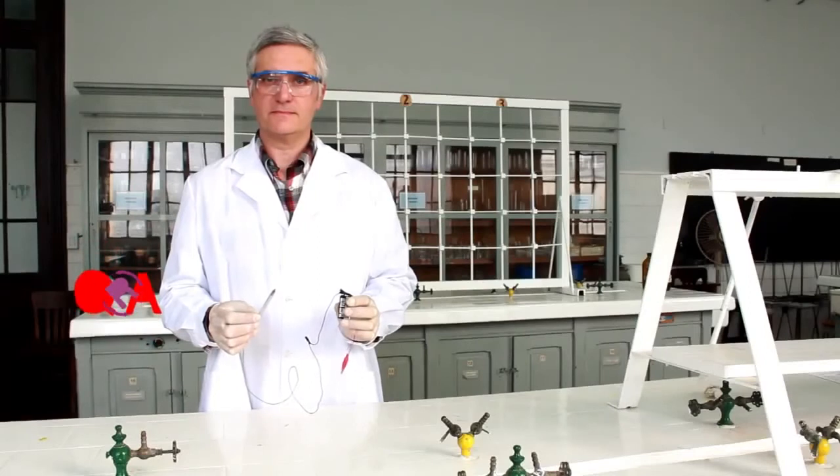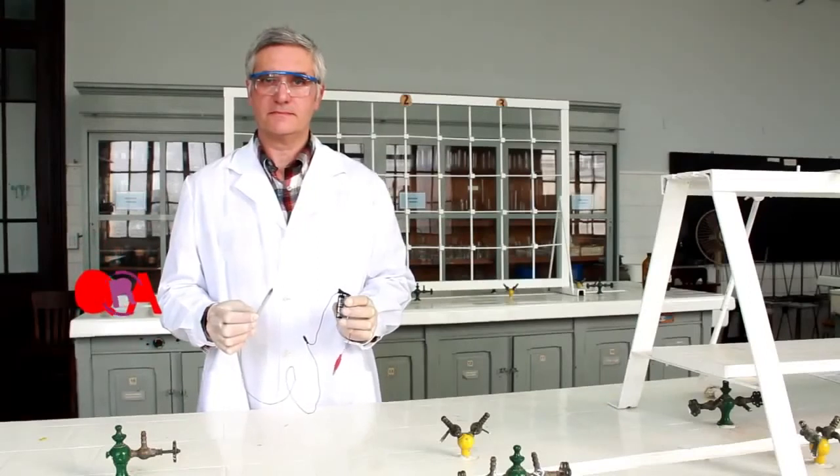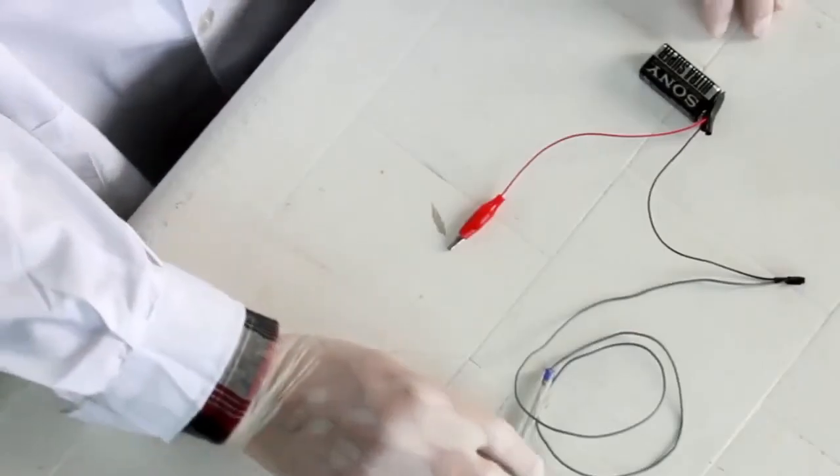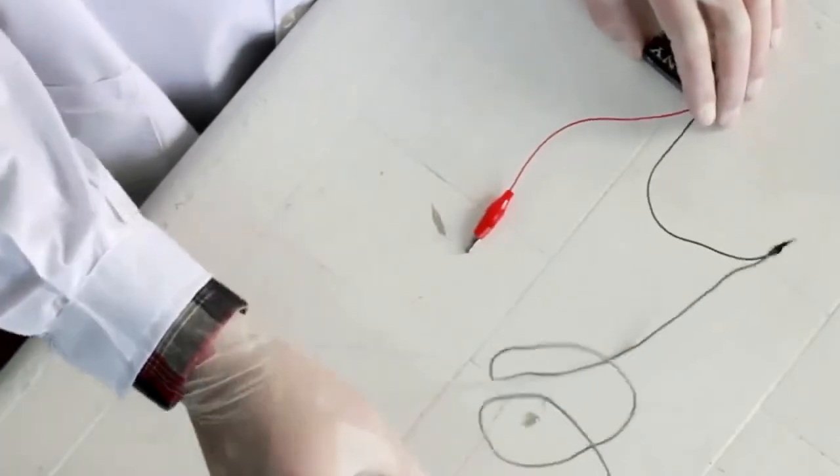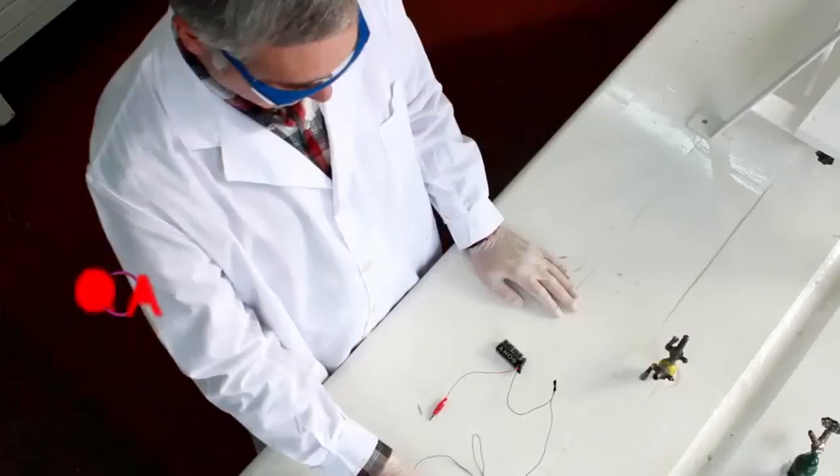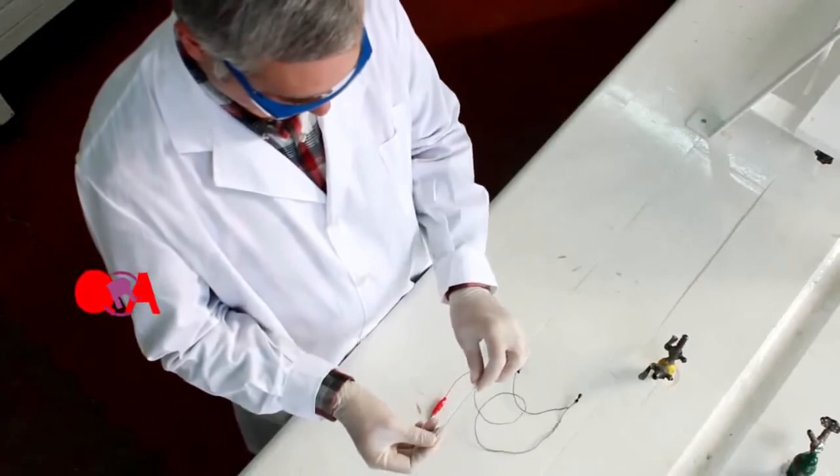Tener la precaución de no colocar el electrodo negativo demasiado cerca del positivo para evitar generar chispas, y mucho menos que los electrodos se toquen entre sí para evitar que el circuito eléctrico se cierre sin pasar por la solución de cloruro de sodio. Para evitar desgarrar el papel, es mejor lijar la punta del alambre.